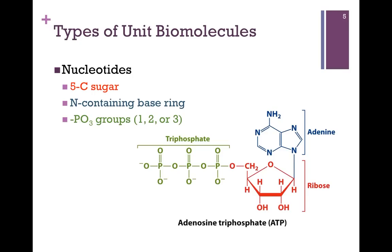but it might also be deoxyribose. To this sugar are attached a nitrogenous cyclic base in blue and one or more phosphate groups highlighted here in green. All nucleotides include these three main components at least, but they can also be more complex in structure, as we'll see.